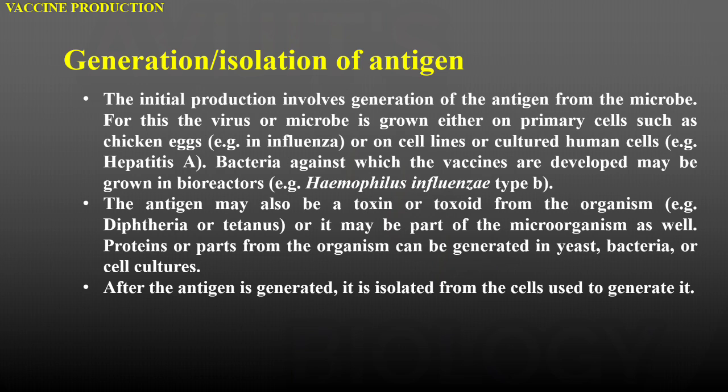The antigen may also be a toxin or toxoid from the organism, like in diphtheria or tetanus, or it may be a part of the microorganism as well. Proteins or parts from the organism can be generated in yeast, bacteria, or cell culture. After the antigen is generated, it is isolated from the cells used to generate it.